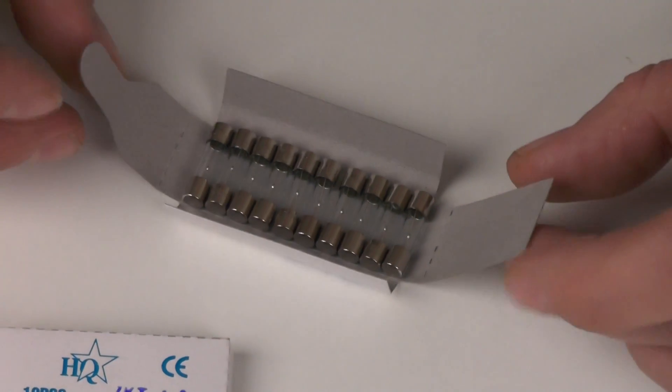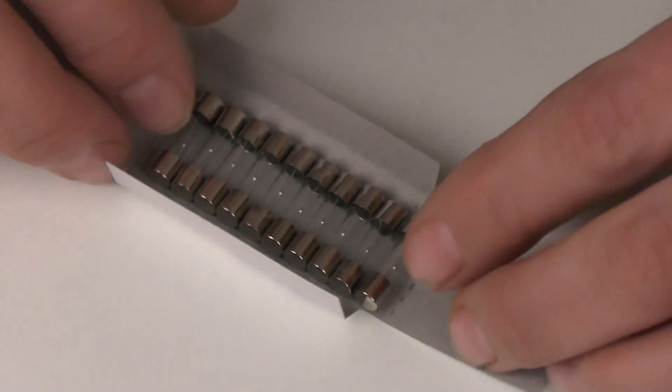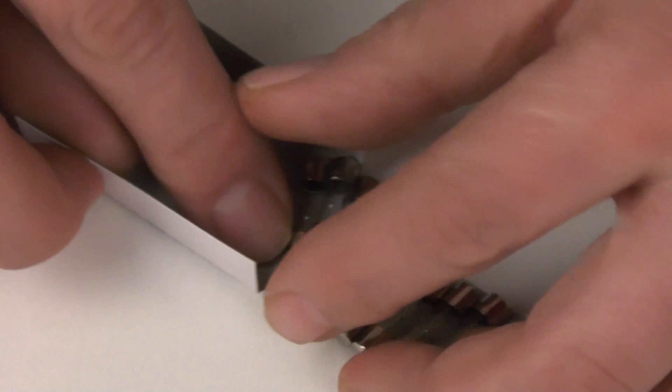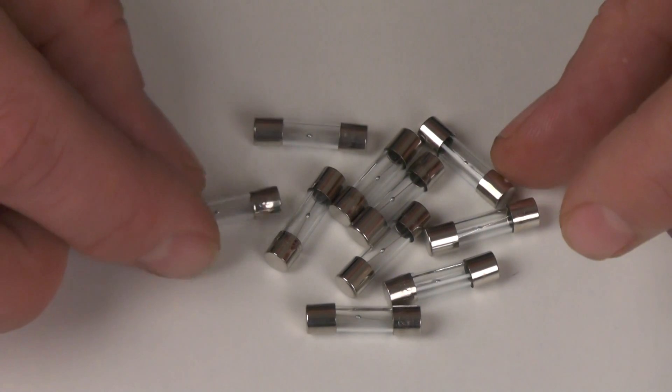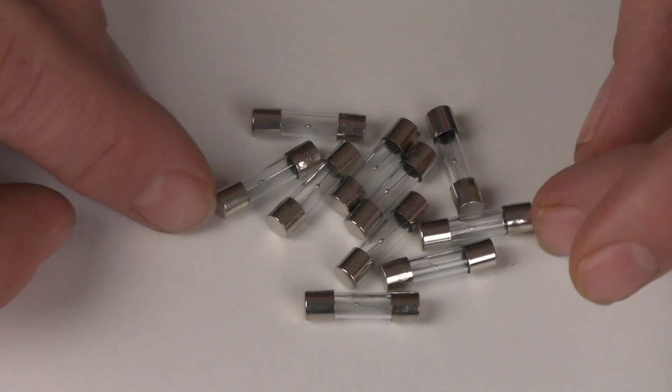I've just opened one of the cardboard packets as you can see. They are resealable and each one has 10 glass fuses present inside. They are 20 millimeters in length and 5 millimeters in diameter, commonly referred to as a 20 millimeter fuse.